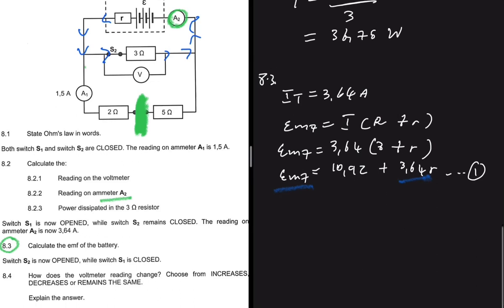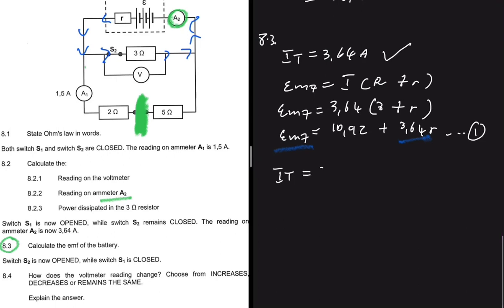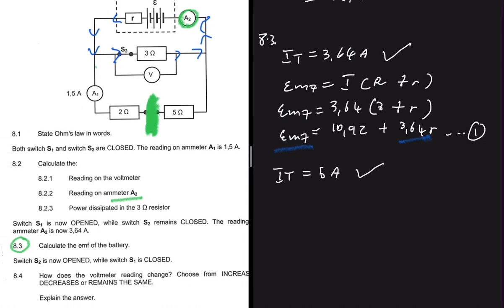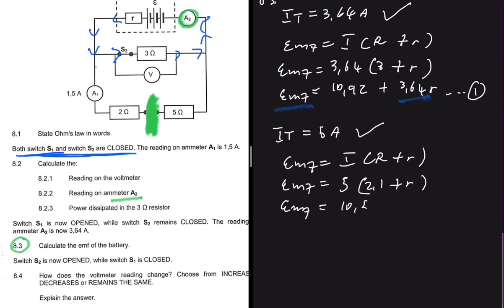When both switches S1 and S2 are closed, we found that IT = 5 amperes. We can use this information to write Equation 2: EMF = I × R_external + I × r. With both switches closed, EMF = 5 × RP + 5r = 5 × 2.1 + 5r = 10.5 + 5r. This is Equation 2.